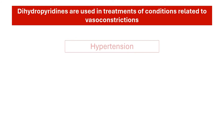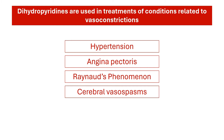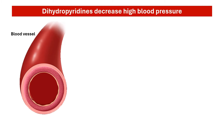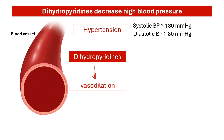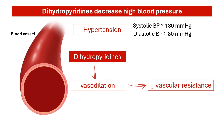This group of drugs is used for a variety of conditions related to increased constriction of blood vessels. They are one of the first-line treatments for hypertension. Blood pressure is the force that blood exerts on the walls of blood vessels — it keeps blood flowing and perfusing tissues to deliver oxygen and nutrients. Hypertension happens when this pressure is higher than it should be. Dihydropyridine CCBs promote vasodilation, which reduces vascular resistance and increases blood flow, resulting in a reduction of blood pressure.